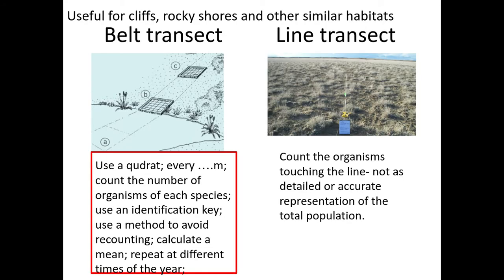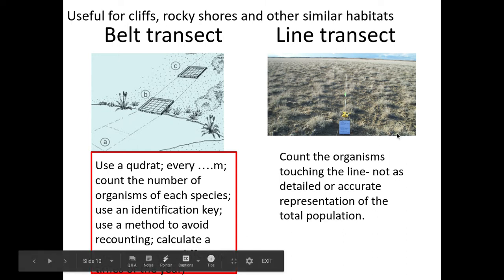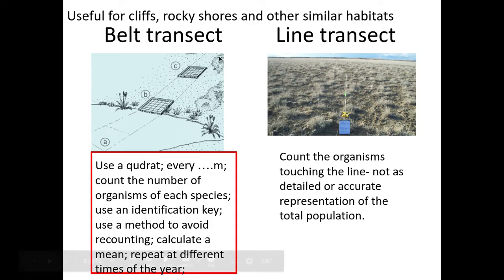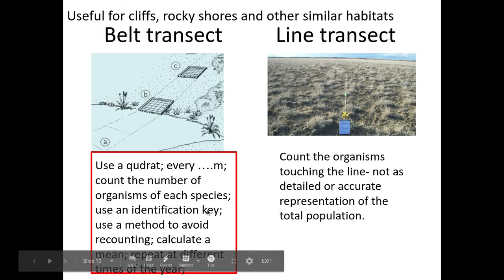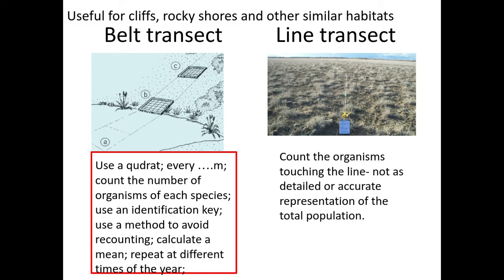Now, transects — we've got a belt transect or a line transect. These are ideal for things like cliffs and rocky shores and other similar habitats which go in a straight line. The belt transect is better than a line transect because in the belt transect you set up two transect lines, and in between those lines — at whatever metre interval you decide — you count the number of organisms of each species using an identification key. You use a method to avoid recounting, calculate a mean, and repeat at different times of year. For the line transect, you just count the organisms touching the line; it's not as detailed, accurate, or representative, so you'd need many more samples.